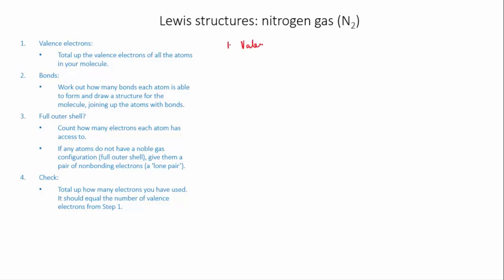So the first thing is to total up the valence electrons. Now we're going to do nitrogen gas N2. So we have two nitrogen atoms. Nitrogen is group 5, we know it has five valence electrons. So with two nitrogen atoms we must have 10 valence electrons in total. So when we get to the end and we've finished our structure we want to have used up 10 valence electrons in the structure.